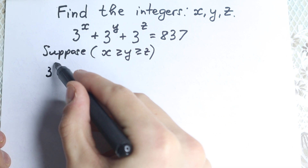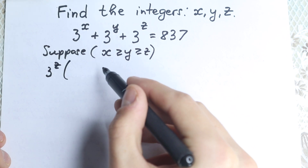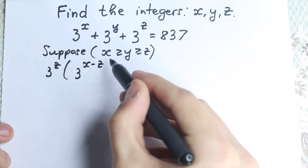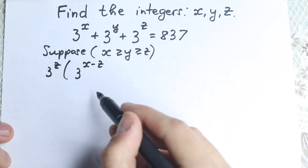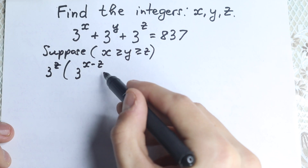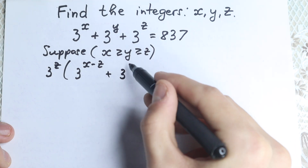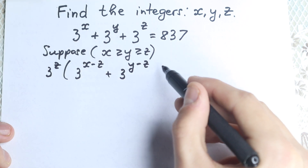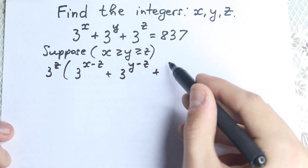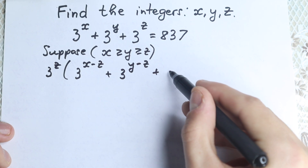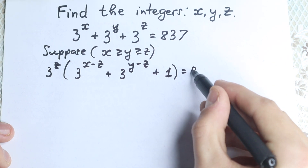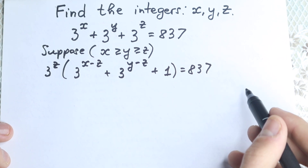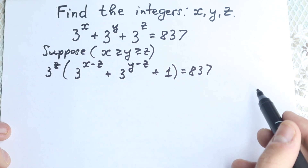If we factor 3 to the power z, what do we have in parentheses? We have 3 to the power x minus z, plus 3 to the power y minus z, plus 1, equal to 837. So this is our first step — we factor 3 to the power z.